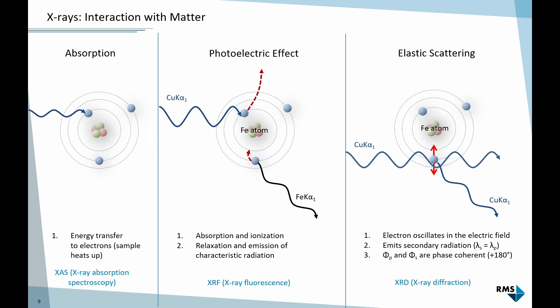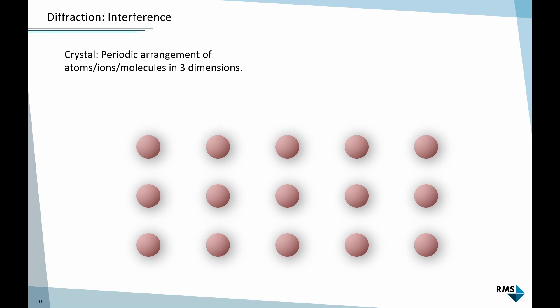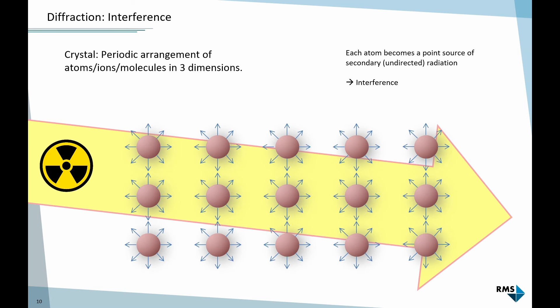For XRD, it is important that the scattered radiation has the same wavelength as the incoming radiation, and there is a phase relationship between the primary and secondary radiation — that's important to get a clear, distinct interference pattern. A crystal structure is by definition a periodic arrangement of ions, atoms, or molecules in three dimensions. When we irradiate this crystal with X-rays, each atom becomes a source of secondary radiation with the same wavelength as the incoming radiation, and all these spherical waves will overlap and produce interference.